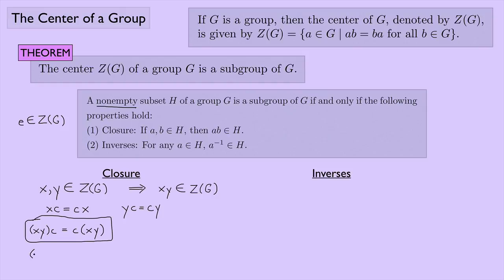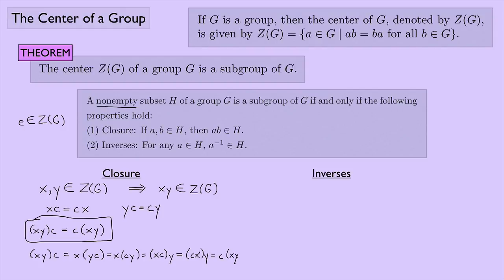We can use those two properties and rearrange things by grouping Y and C together using the associative property — which holds because X, Y, and C are all in group G. Since Y and C commute, we get C times Y, then we group X and C together, change their order since they commute, and we end up with C times X times Y. So XY commutes with C, which is what we wanted to show.